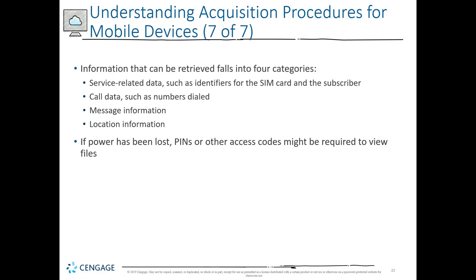Information retrievable from a SIM falls into four main categories: service-related information such as subscriber or SIM identifiers; call data including call logs and numbers dialed; message information or message logs; and location logs, which include GPS coordinates and GPS information based on the device's location. If power has been lost, a PIN code or other access code may be required to view the device's contents. Android and iPhone both have heavy encryption on their mobile devices — it just depends on whether the end user has opted to turn it on.